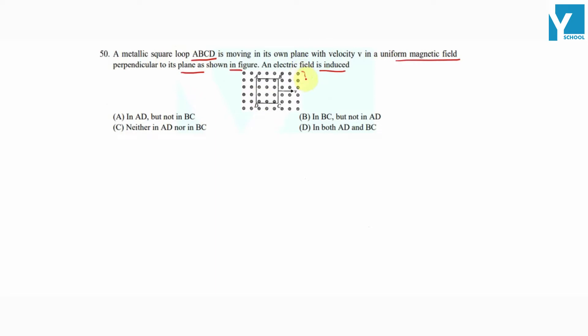The question is given the reason why we have magnetic field represented by dots which is perpendicular to the plane. Take loop ABCD and the loop is moving with velocity v in the region of magnetic field. Tell us which arm will produce an electric field.